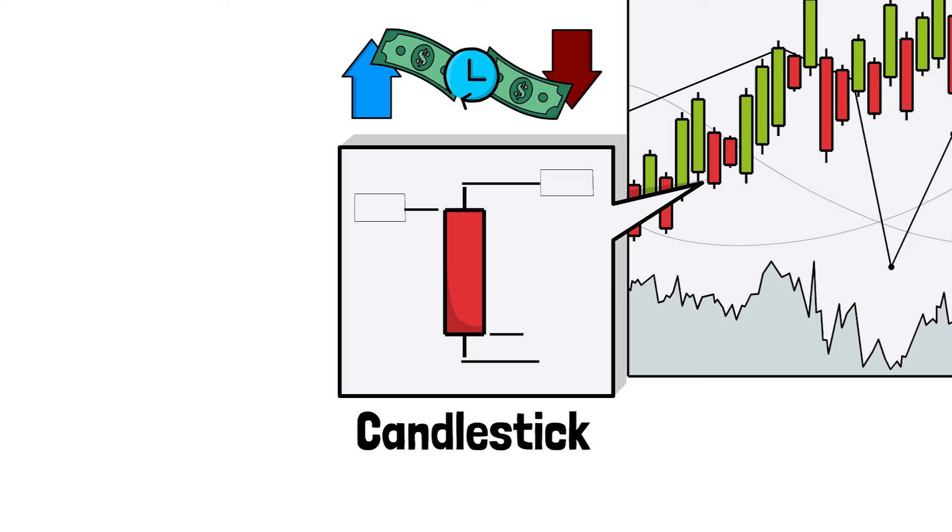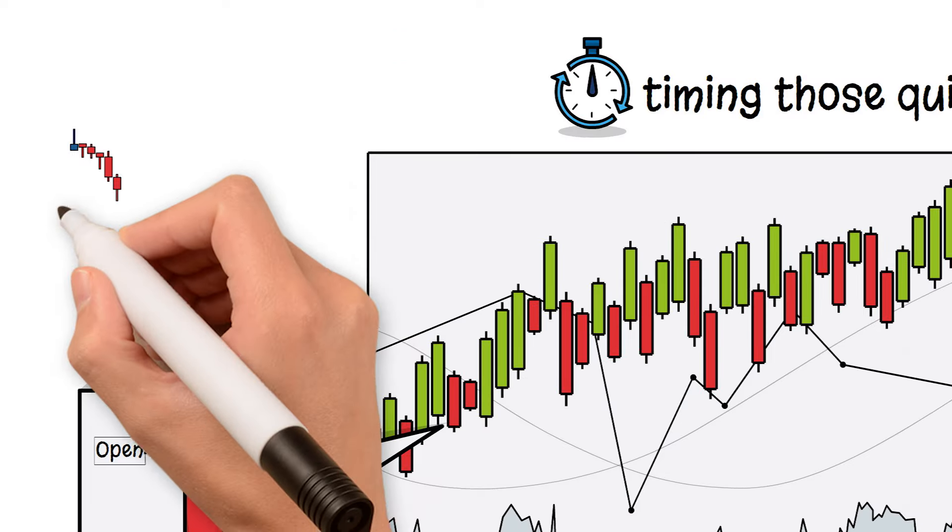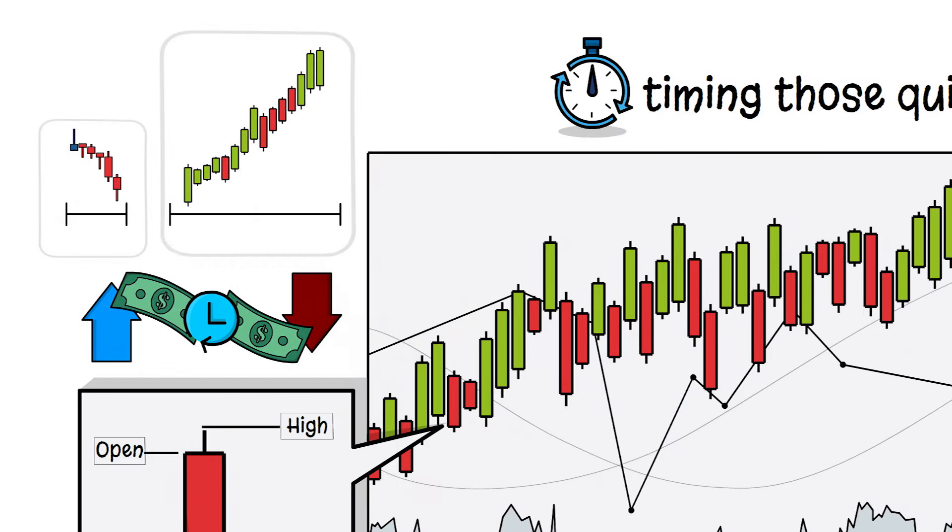Each candlestick gives you four key pieces of info: the opening price, closing price, and the highest and lowest points of the time frame you're looking at. As a scalper, you'll be zooming in on one-minute or five-minute charts to spot quick opportunities.